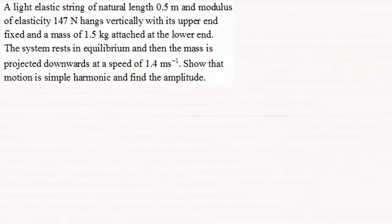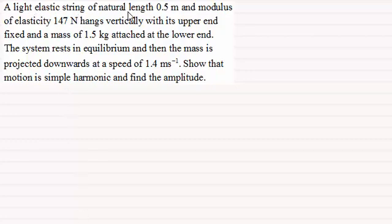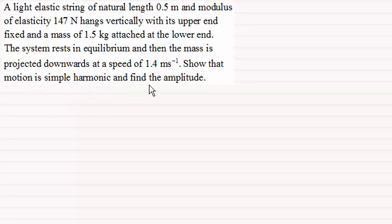Here's another example on simple harmonic motion where we've got a light elastic string of natural length 0.5 meters, a modulus of elasticity 147 newtons, which hangs vertically with its upper end fixed and a mass of 1.5 kilograms attached at the lower end. The system rests in equilibrium and then the mass is projected downwards at a speed of 1.4 meters per second. Show that the motion is simple harmonic and find the amplitude.